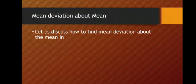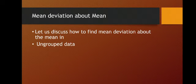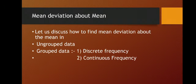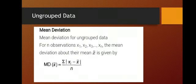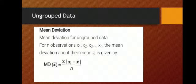Mean deviation about the mean clearly tells us how much the data is scattered — what is the deviation. Let us discuss how to find mean deviation about the mean in case of ungrouped data. We have grouped as well as ungrouped data. In case of ungrouped data, if we consider n observations x1, x2 till xn, the mean deviation about their mean is given by: first find the mean x-bar, then mean deviation about the mean equals summation of mod of (xi minus x-bar) upon n.